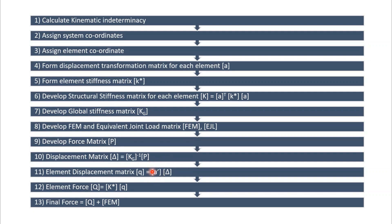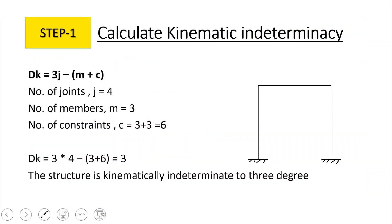From the force matrix and the global stiffness matrix, we calculate the displacement using the equation: displacement equals inverse of the global stiffness matrix multiplied by the force matrix. Then we find the element displacement matrix using the displacement transformation matrix. Finally, we calculate the element forces using the equation Q = K* × q, and find the final force by adding the element forces and fixed end moments.